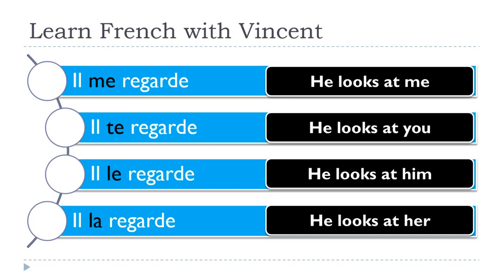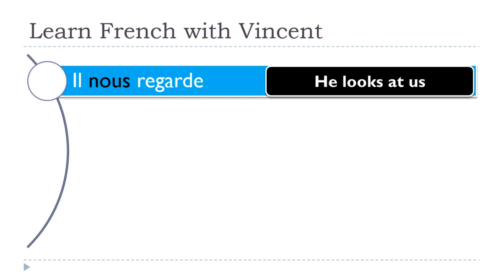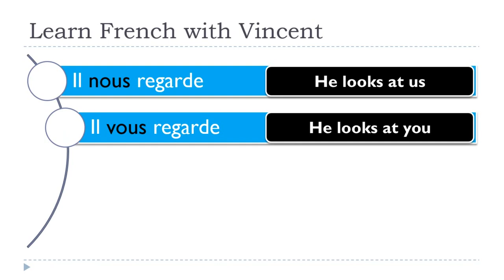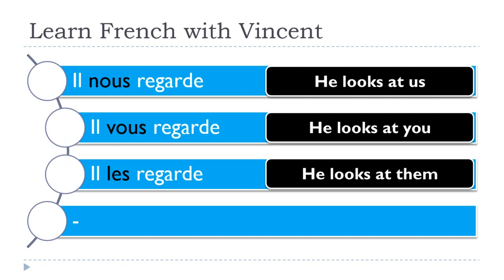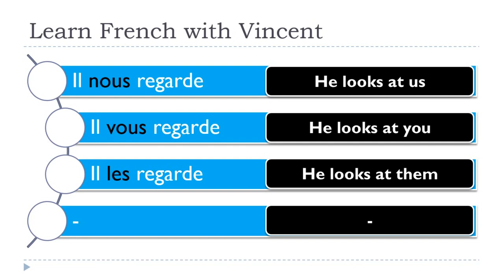Note the difference: LE for masculine, LA for feminine. In English both translate as 'him/her,' but LE and LA can also refer to objects — Il le regarde could mean 'He looks at IT' if the object is masculine, like CAFÉ. Il la regarde could mean 'He looks at it' for a feminine object. For the plural: Il nous regarde — He looks at us. Il vous regarde — He looks at you. Il les regarde — He looks at them. There is only one plural form LES — no distinction between masculine and feminine.